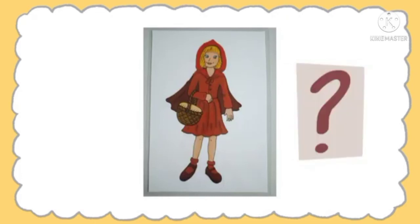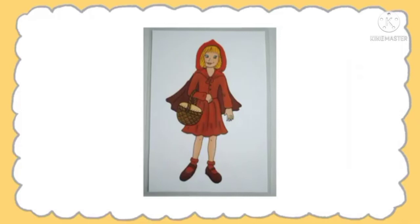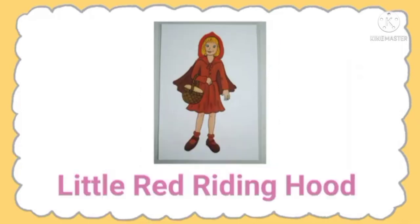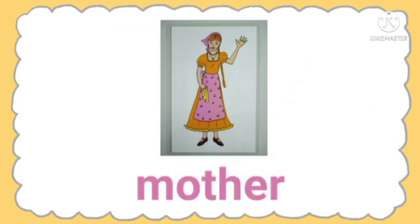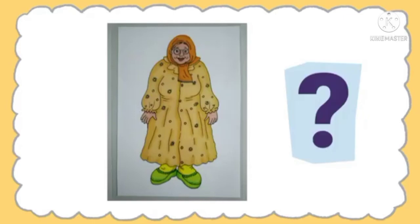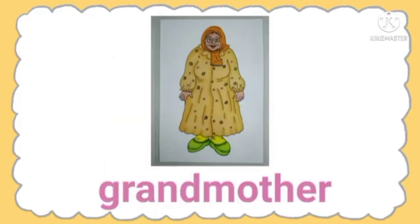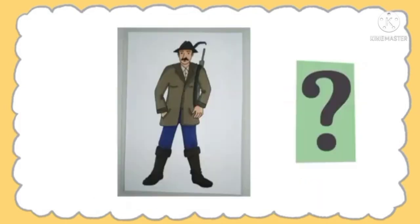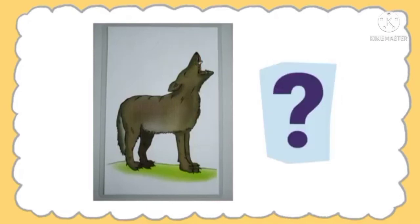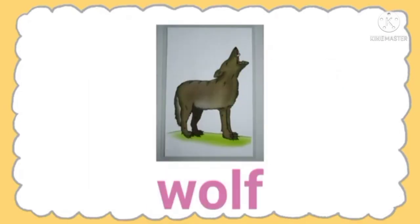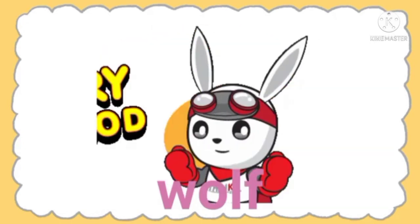Very good. Who is this? Very good. This is Little Red Riding Hood. Who is this? Very good. This is Mother. Next, who is this? Very good. This is Grandmother. And who is this? Very good. This is the Hunter. And last but not the least, who is this? Very good. This is the Wolf. Very good, children.